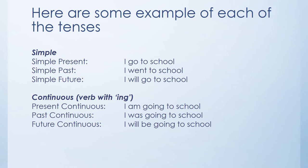Here are examples of simple and continuous tenses. Simple present: I go to school. Simple past: I went to school — the action is complete, it's done. Simple future: I will go to school. For continuous verbs with '-ing': present continuous is 'I'm going to school' — something happening right now. Past continuous: 'I was going to school' — an action in the past that was ongoing. Future continuous: 'I will be going' — talking about something that will be happening in the future on a regular basis.